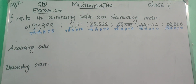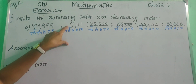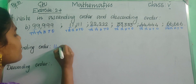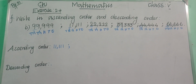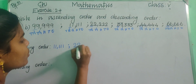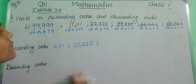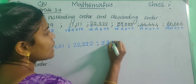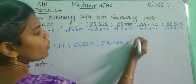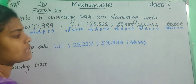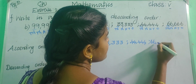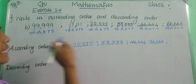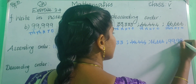The smallest ten-thousands digit is 1, so 11,111 — eleven thousand one hundred and eleven — is the first. Then 2, so 22,222 is next. Then 3, so 33,333. Then 4, so 44,444. Then 6, so 66,666. And at the last, the greatest is 99,999 — ninety-nine thousand nine hundred and ninety-nine.